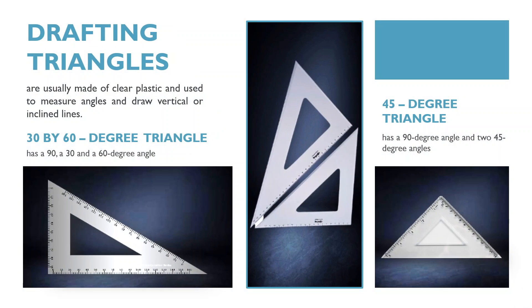Drafting triangles, usually made of clear plastic, are used to measure angles and draw vertically inclined lines. There are two common types: the 45-degree triangle and the 30x60-degree triangle, named by the size of their acute or small angles. The 45-degree triangle has a 90-degree angle and two 45-degree angles, while the 30x60-degree triangle has a 90, a 30, and a 60-degree angle. Drafting triangles are available in sizes ranging from 4 to 18 inches.